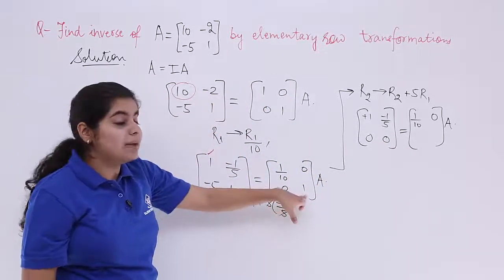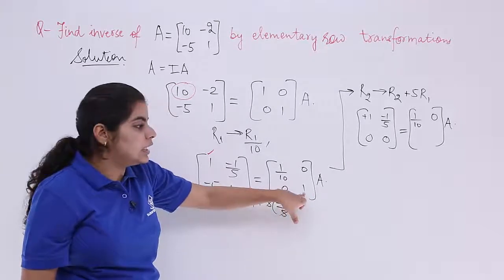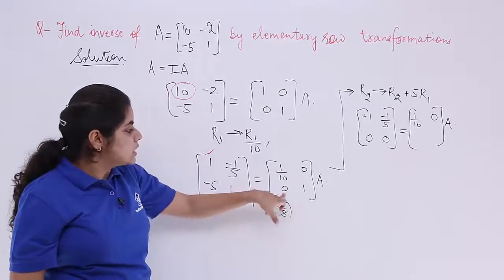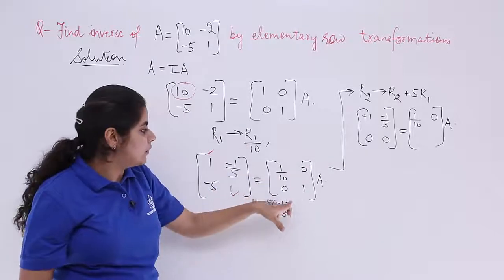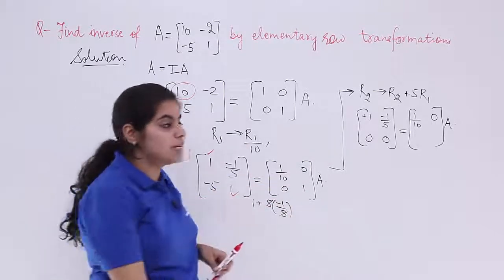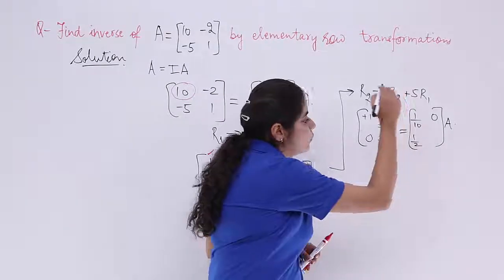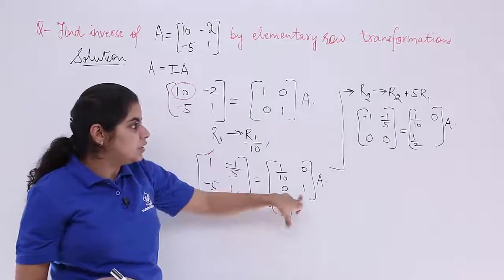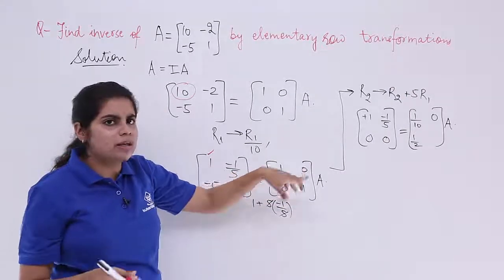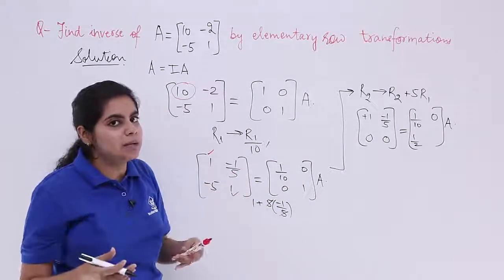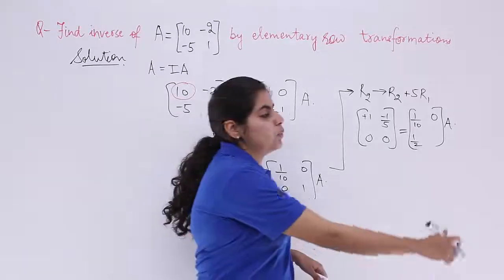Next we have the things applied to the same case here in the second row. So it is 0 plus 5 R1. So 0 plus 5 by 10, 1 by 2. Next we have 1 here and plus 5 into R1. Does not change because anything multiplied by 0 is 0. So it is 1 only.